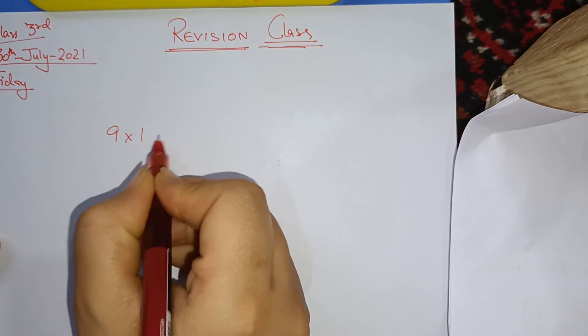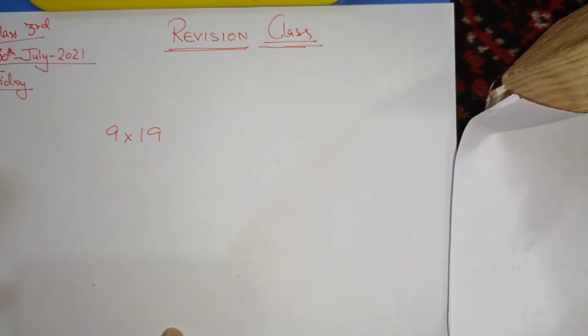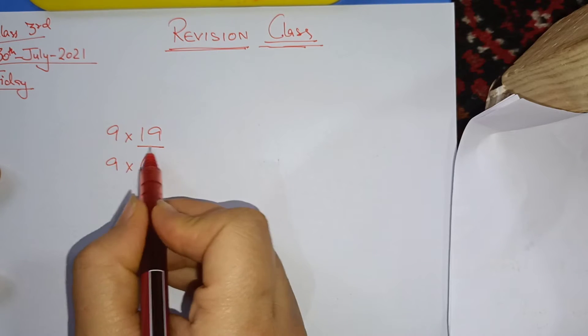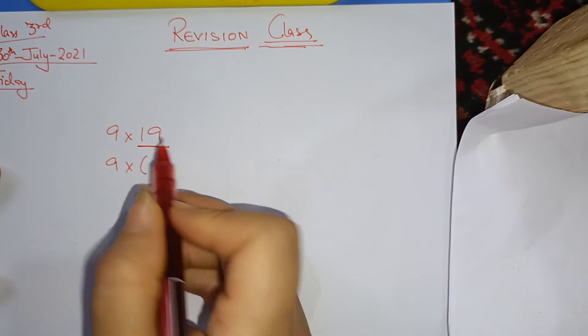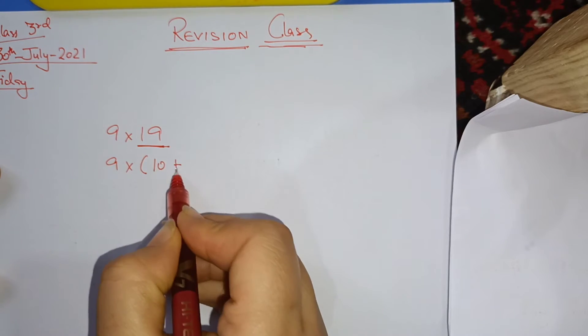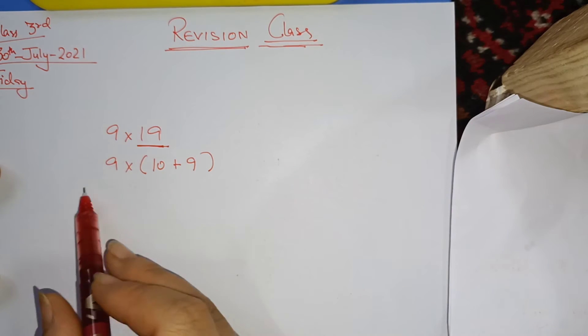9 into 19, you have a question. Now we will do it in which way? 9 into 19, we will break it in which way? We will write 9 into 10 plus 9.